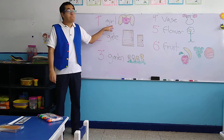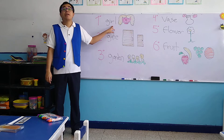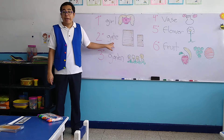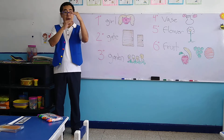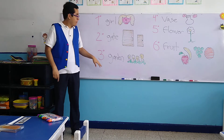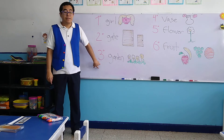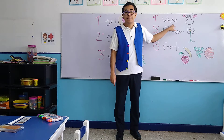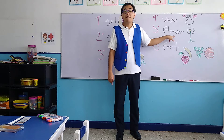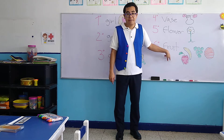Please repeat after me. Girl. One more time — girl. Gate. Gate. Don't forget that a gate is a big door. Garden. One more time — garden. Vase. Vase. Flower. And the last one — fruit.